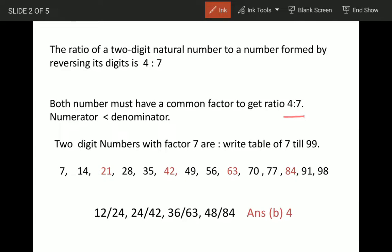As I told you, there should be a common factor between the numbers. When we say 4 is to 7, that means numerator is less than denominator.